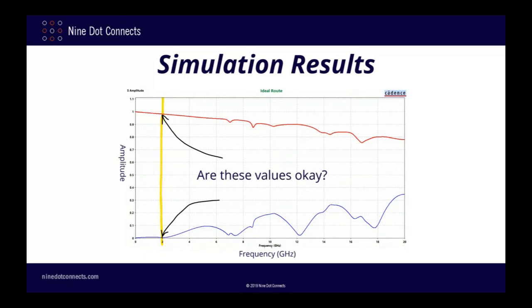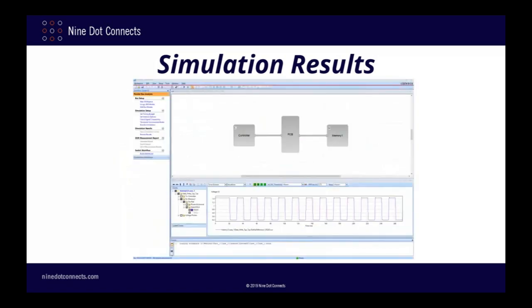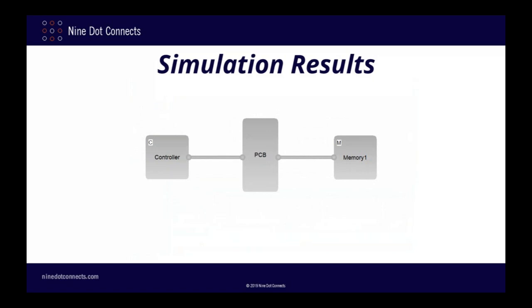It would be more helpful to see this information presented as waveforms in the time domain, since that's where we humans tend to live. To do this, we need to use a system level simulator such as Cadence SystemSI. This tool will use the S-parameter model of the PCB along with models of the actual components themselves to generate waveforms in the time domain. Here we see three blocks representing the three simulation objects: the FPGA memory controller, the DDR3 memory device, and the PCB model itself.